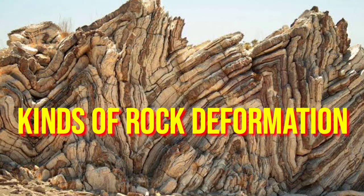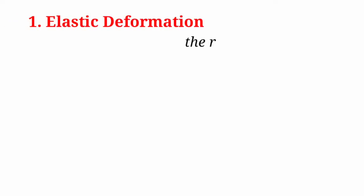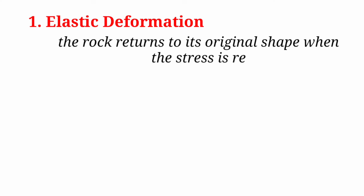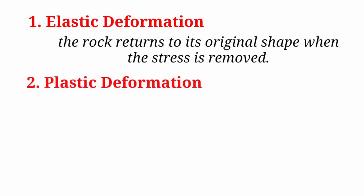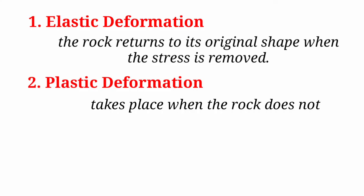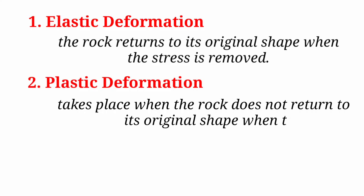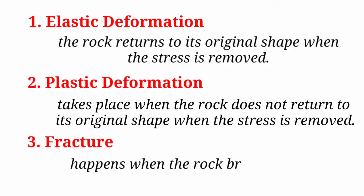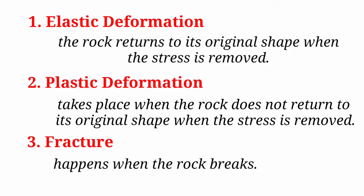There are three kinds of rock deformation. The first kind is called elastic deformation, which happens when the rock returns to its original shape when the stress is removed. Second is plastic deformation, which takes place when the rock does not return to its original shape when the stress is removed. And last is called fracture, which happens when the rock breaks because of too much stress.